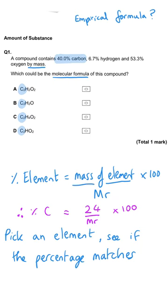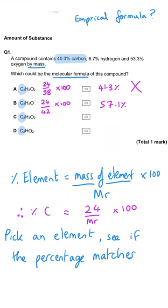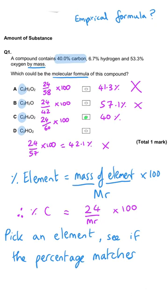For A we do 24 divided by 58 times 100, which gives 41.3% carbon. B is 24 divided by the MR of 42 times 100, which gives 57.1%, so those two are both wrong. C is 24 divided by 60 times 100, which is 40% carbon, so C is correct. Running the same numbers for D gives 42.1% carbon, confirming that C is the correct answer.